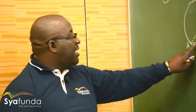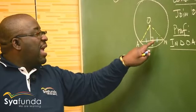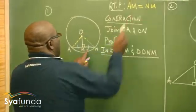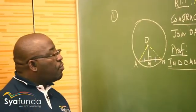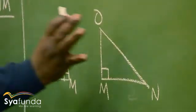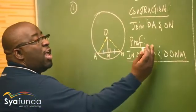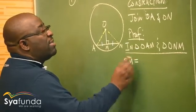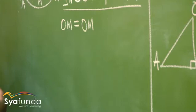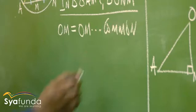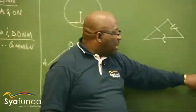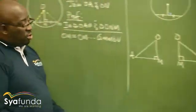Let's do the proof. Remember, this is not given - this is what we want to prove. We want to show that AM equals NM. Number one: look at triangle OAM. Do you see OM in this triangle? It is equal to OM in the other triangle ONM. OM belongs to this triangle and the same OM belongs to the other triangle. So OM equals OM. What is the reason for this? They are a common side. So we've got side - step one.